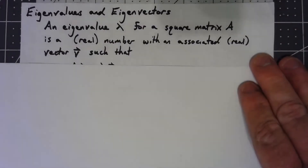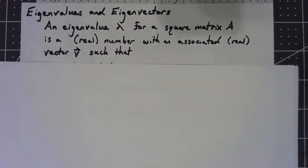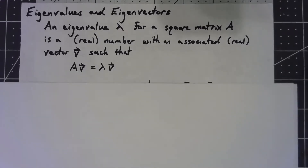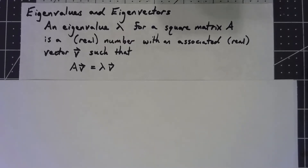The basic idea is that an eigenvalue is a real number lambda — and while there are complex eigenvalues, we're going to restrict ourselves to real ones for this course. An eigenvalue is a real number with an associated real-valued vector such that multiplication by the matrix A is the same thing as multiplying by that real number.